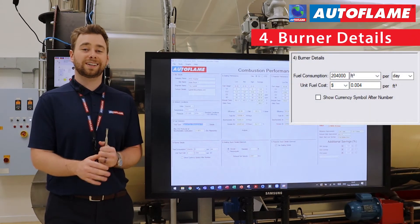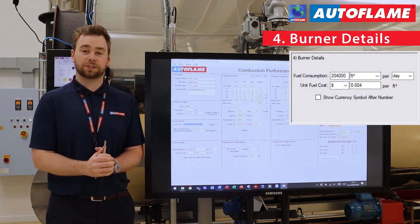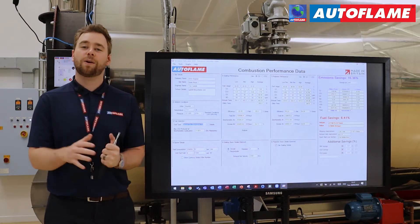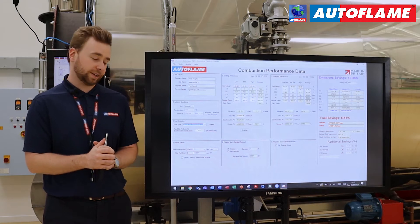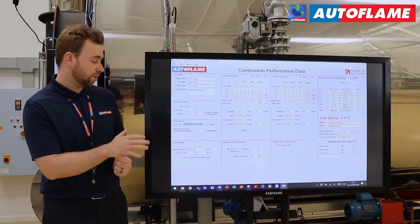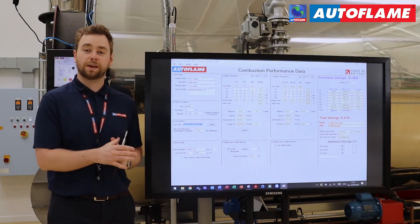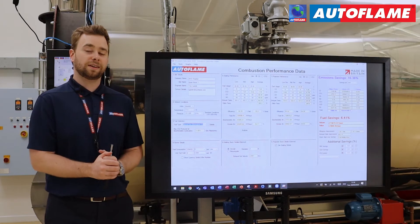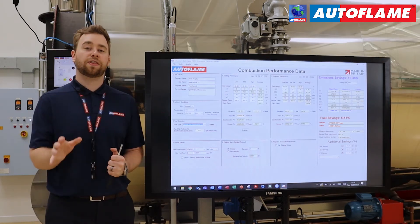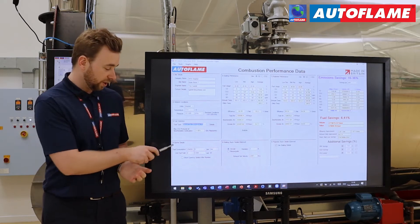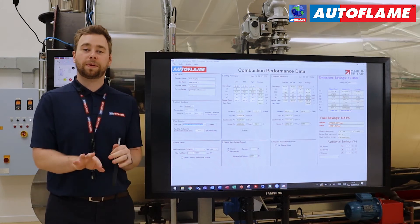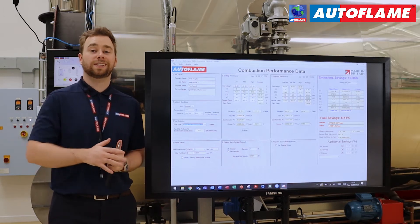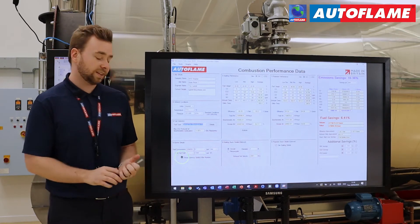Section number four covers your burner details — this is really where we define your fuel cost and your fuel usage. You should be able to get this from the customer's fuel bill, maybe on a weekly or monthly basis. First thing we need is the fuel consumption; we've got just over 200,000 cubic feet per day, and then we've got the fuel cost. This varies state by state and customer by customer, so we've got four dollars per thousand cubic feet. We're using US dollars, but you can type in whatever unit of currency you want — for example, South African Rand. If your unit of currency has the symbol after the numbers, you can also select the box at the bottom.